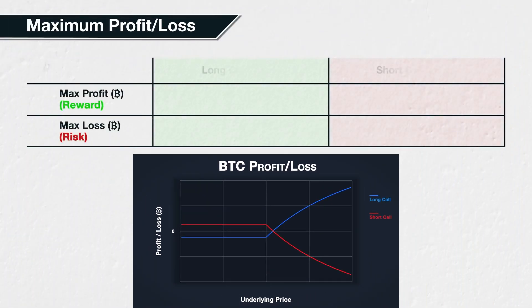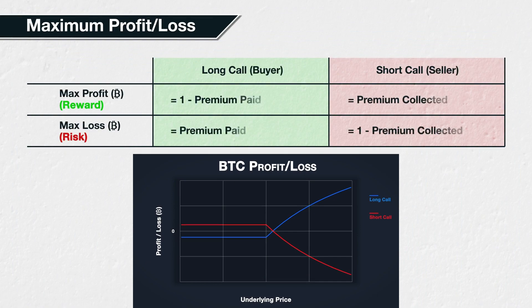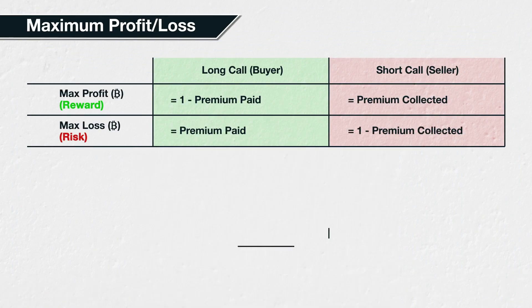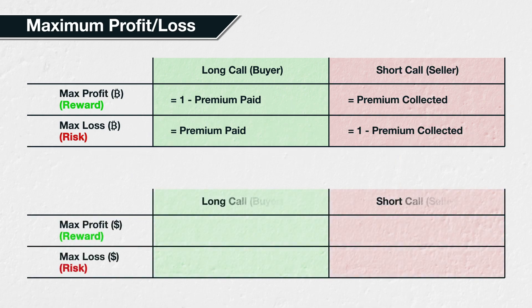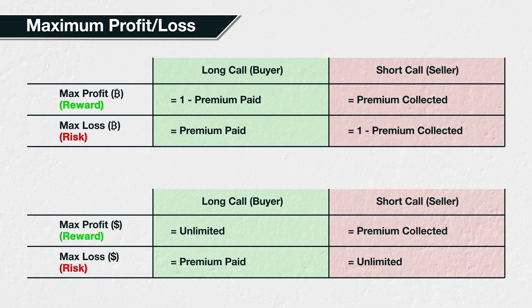This results in these maximum Bitcoin profit or loss formulas. It's worth noting again that if measured in dollars, these formulas for maximum profit or loss would be the same as the ones given in lecture 3.7. It's because we are measuring things in Bitcoin here, the base currency, that they are different.